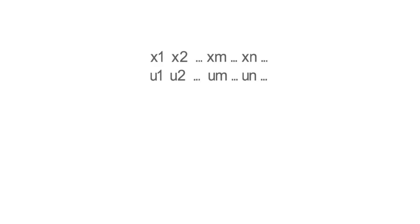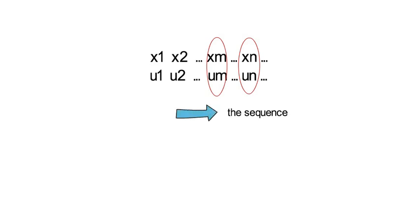Some background information: any random number generator will eventually produce a sequence of Xi and Ui that has already occurred. Once that happens, the sequence is going to repeat itself. That is something which, of course, we would like to prevent at all costs.